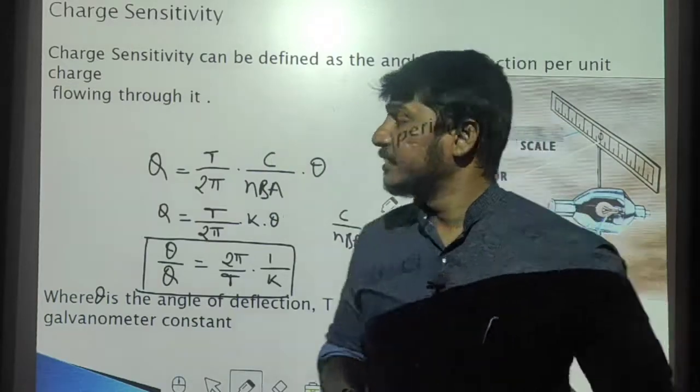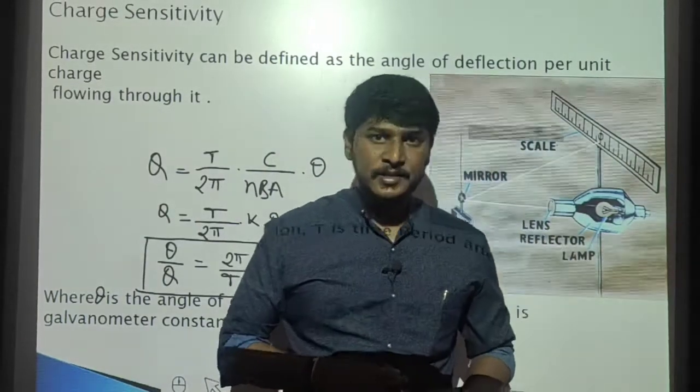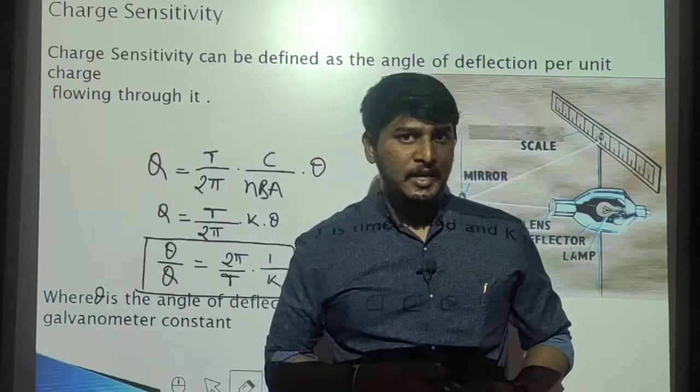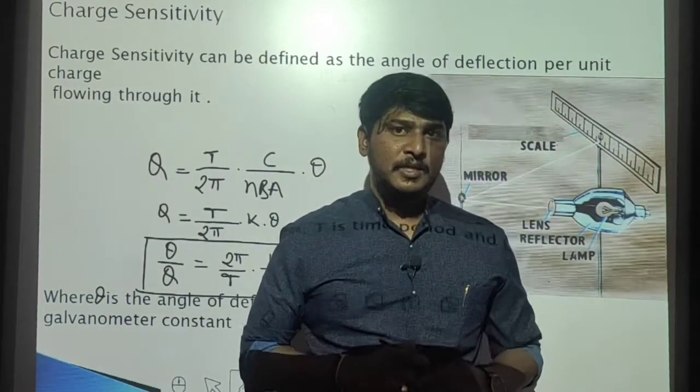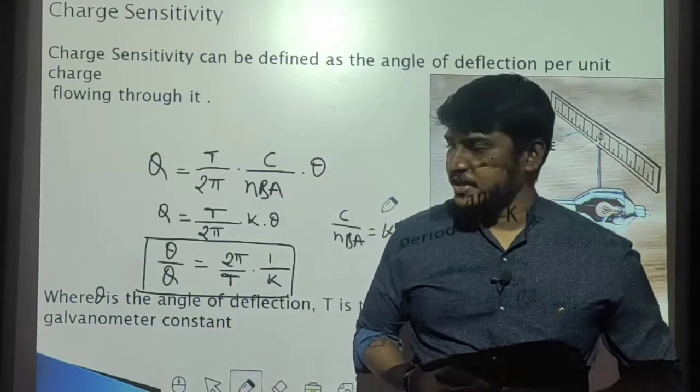Here, charge sensitivity is the amount of deflection produced for unit charge, where theta is the angle of deflection, T is the time period, and K is the galvanometer constant or current reduction factor.